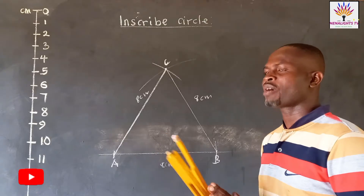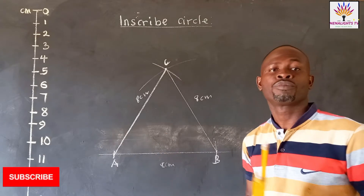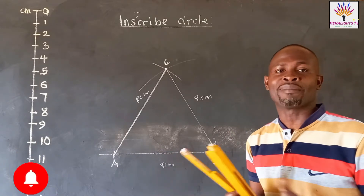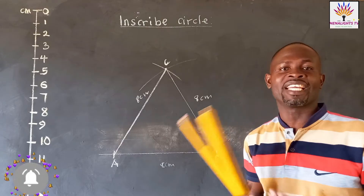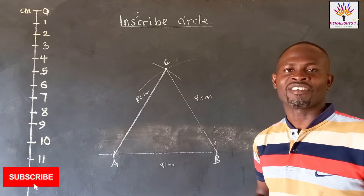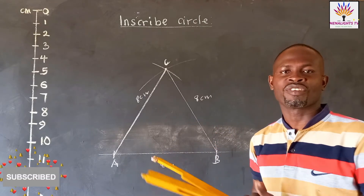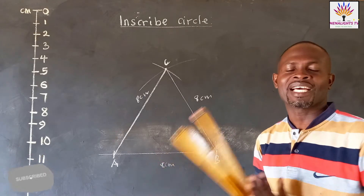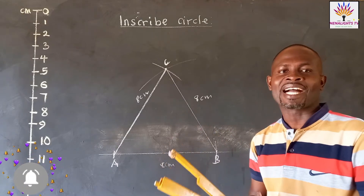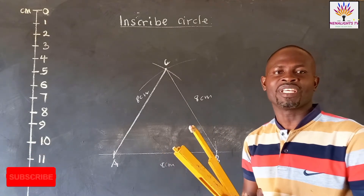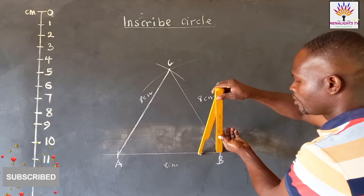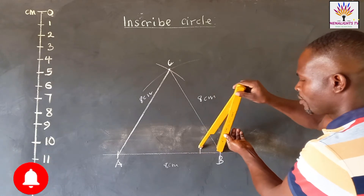So now we are going to bisect any two angles. You can bisect the angle at A, the angle at B, or the angle at C. Here we are going to bisect the angle at A and then the angle at B.